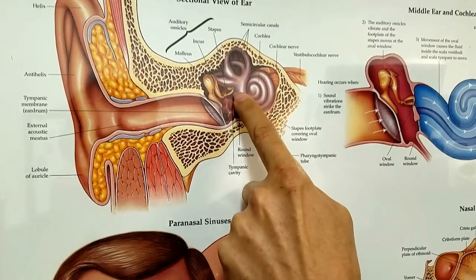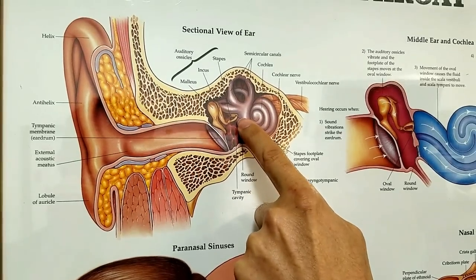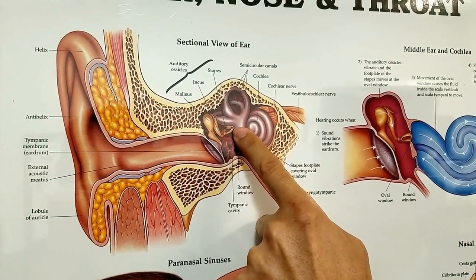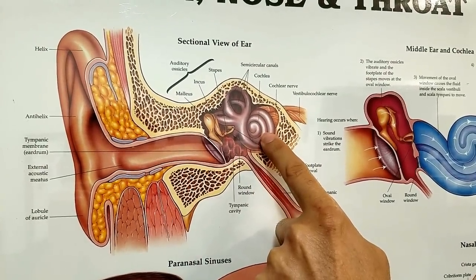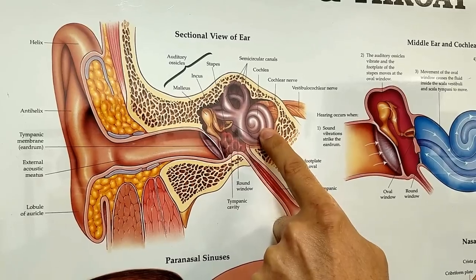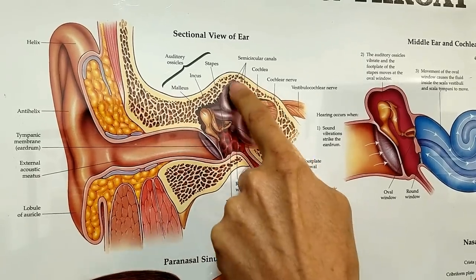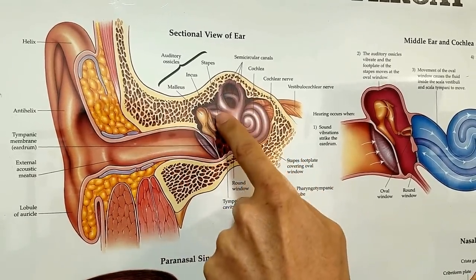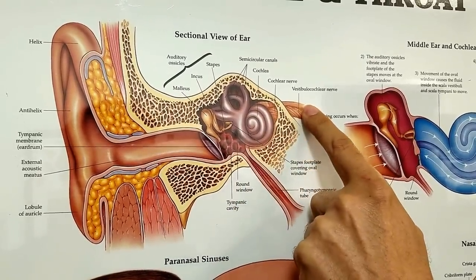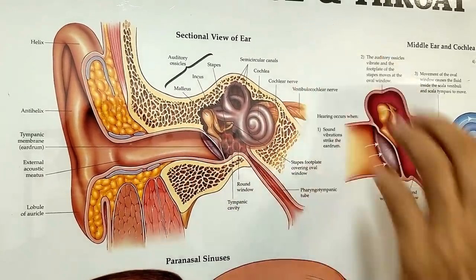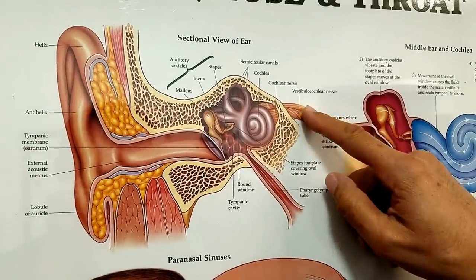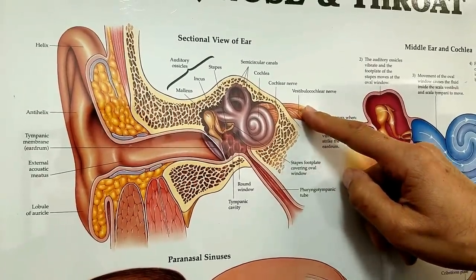The inner ear starts on the inside surface of this third bone of hearing and consists of the cochlea, which is the snail shell-shaped organ responsible for hearing, and the semicircular canals, responsible for balance. There are nerves here, and this is where some of the tumors I remove — called acoustic neuromas — are located.